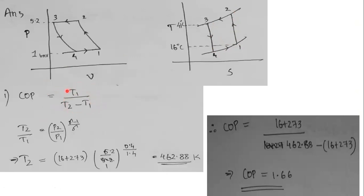T1 is known as 16°C, but T2 is not directly given. To find T2, we apply the isentropic relation to process 1→2: T2/T1 = (P2/P1)^((γ−1)/γ). Substituting P2 = 5.2 bar, P1 = 1 bar, and T1 = 16 + 273 K with γ = 1.4.